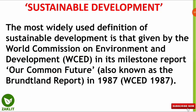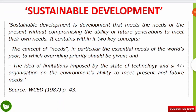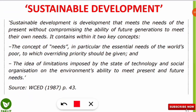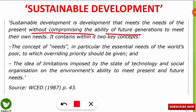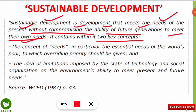Let's move to the definition given in the World Commission on Environment and Development. The definition of sustainable development is: 'Sustainable development is the development that meets the needs of the present — meaning the present generation and present situation — without compromising the ability of future generations to meet their own needs.' This definition contains two key concepts mentioned by the WCED.